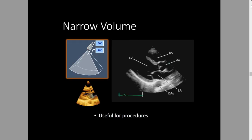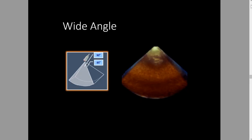Narrow volume is a thin, long pyramid, and we tend to use this a lot when doing procedures and we need a quick look at something. It's also called live volume mode. As you can see here, it's just a very thin slice. Wide angle is the biggest pyramid you can get. We usually use it for acquiring large structures like the left ventricle, right ventricle, or if you want to get the atrium and ventricle or the whole heart.